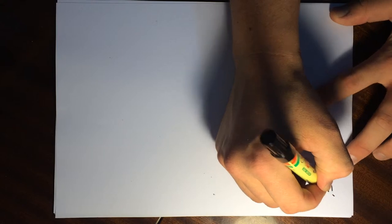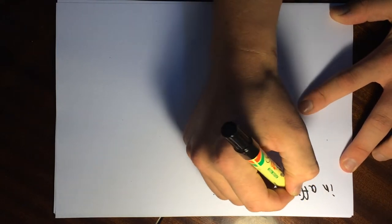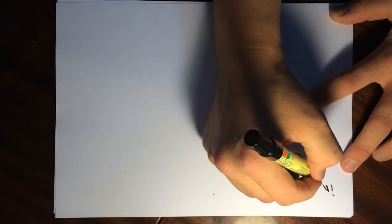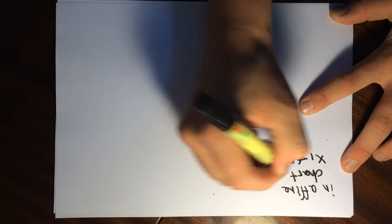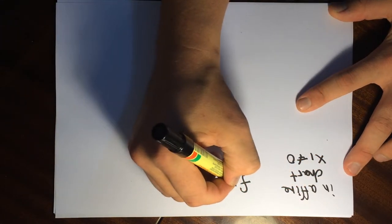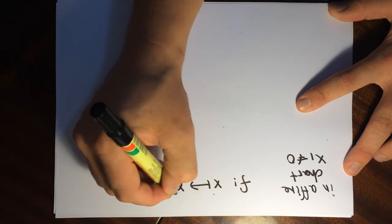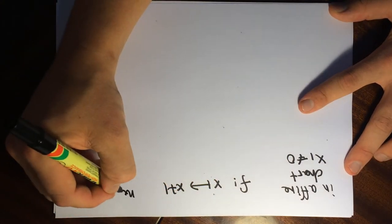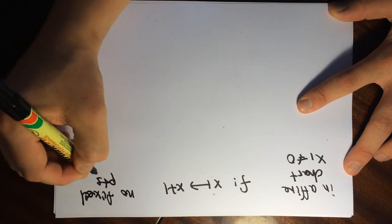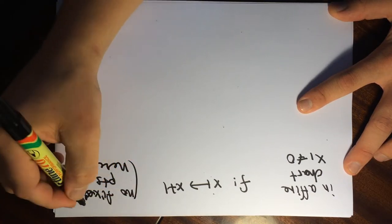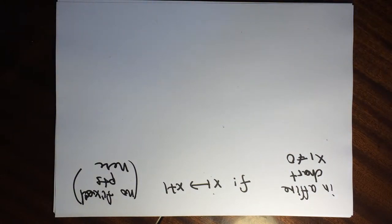In the affine chart where X₁ ≠ 0, the map F was given by X maps to X plus 1. There are no fixed points in this affine chart, so we need to look at the chart at infinity.